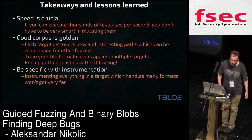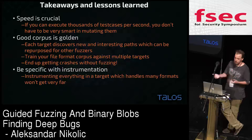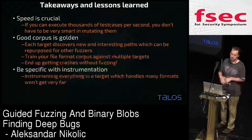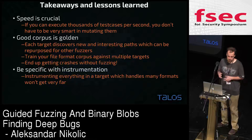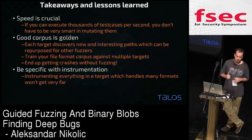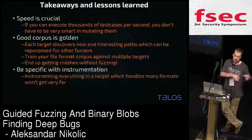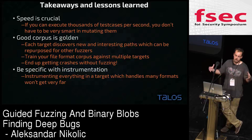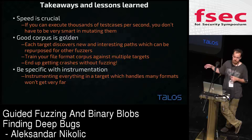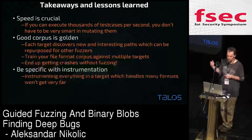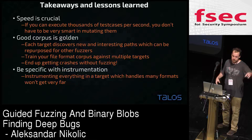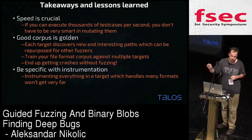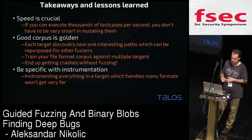Just to wrap things up, some takeaways from a year of using this tool and AFL: speed is crucial — every single hertz in your processor needs to be utilized. The second thing is that a good corpus is golden. I started with a small corpus, grew it against different applications, and ended up with a really nicely groomed corpus which I can now throw against a new application without even fuzzing it and usually get a bunch of crashes that way. The third thing is to be very specific with instrumentation — I want to target a particular functionality of the process I'm focused on, not a bunch of libraries that other people are already targeting.